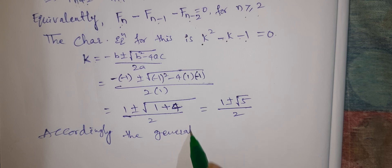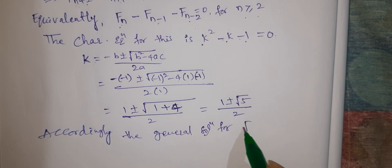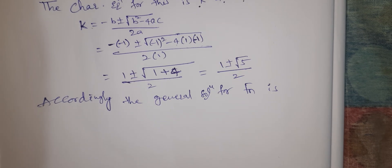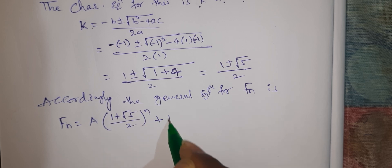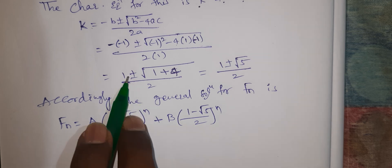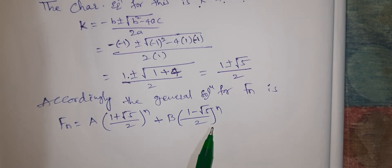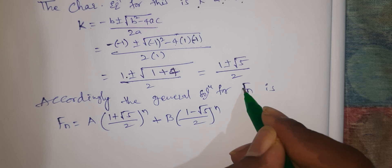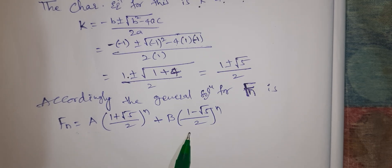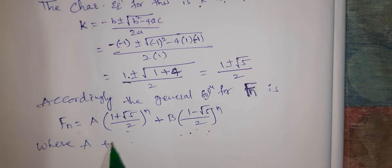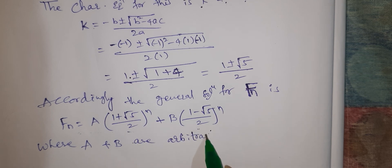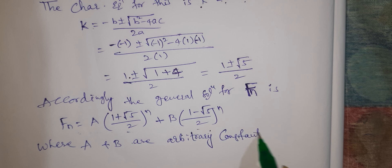Accordingly, the general solution for f(n) is: f(n) = A · ((1 + √5)/2)^n + B · ((1 - √5)/2)^n, where capital A and B are arbitrary constants.